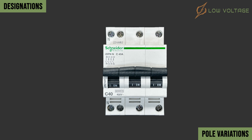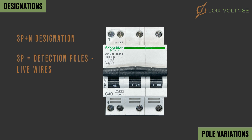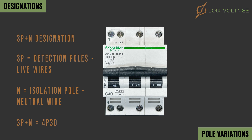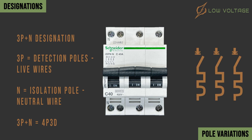This is a three poles plus neutral MCB, having a 3P+N designation, so it can be considered as a four poles MCB. Three are for detection used for live wires, and the last one is for isolation used for the neutral wire. So it can also be defined as four poles, three detection, or 4P3D, having three detection symbols and one isolation symbol.